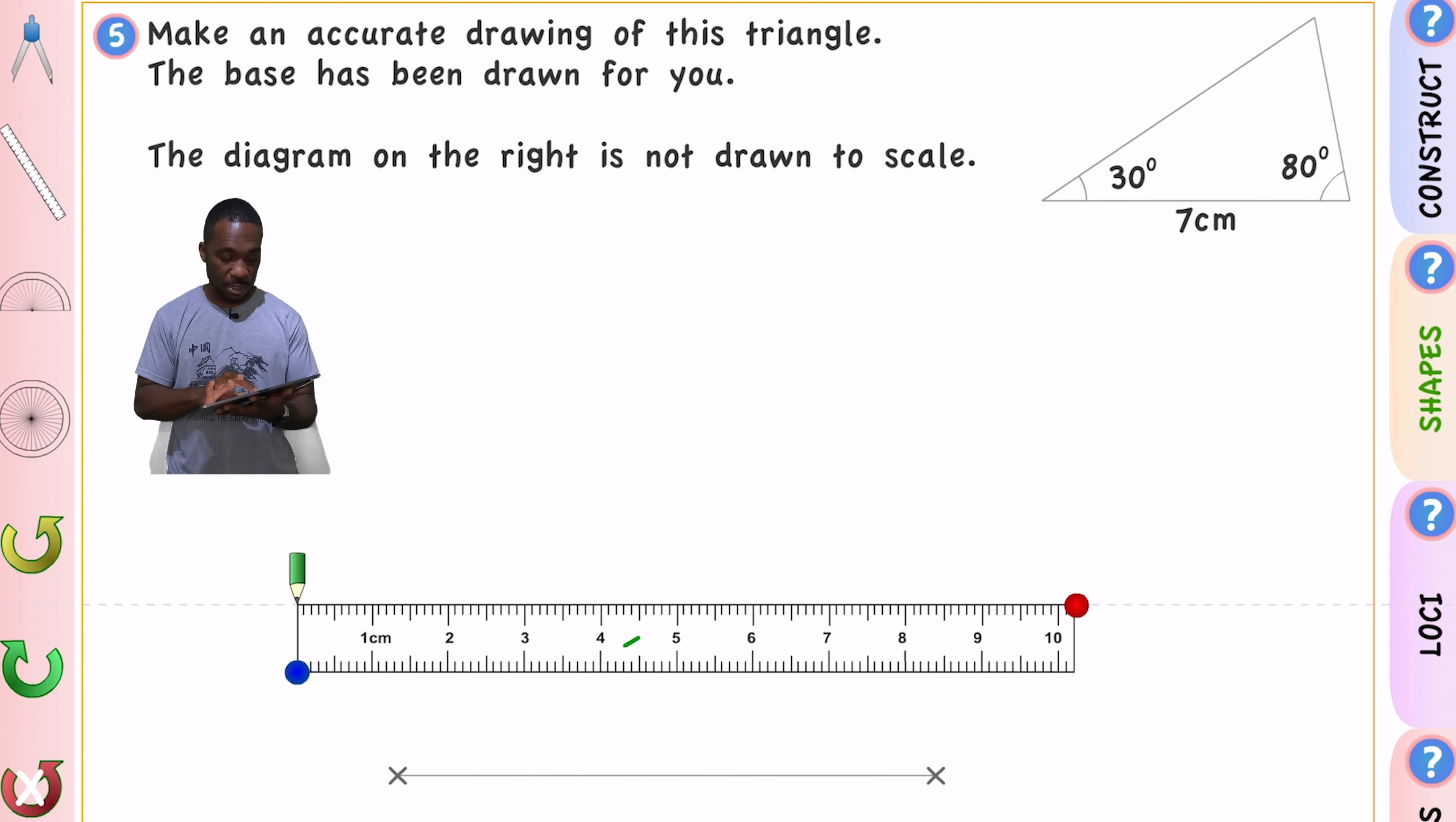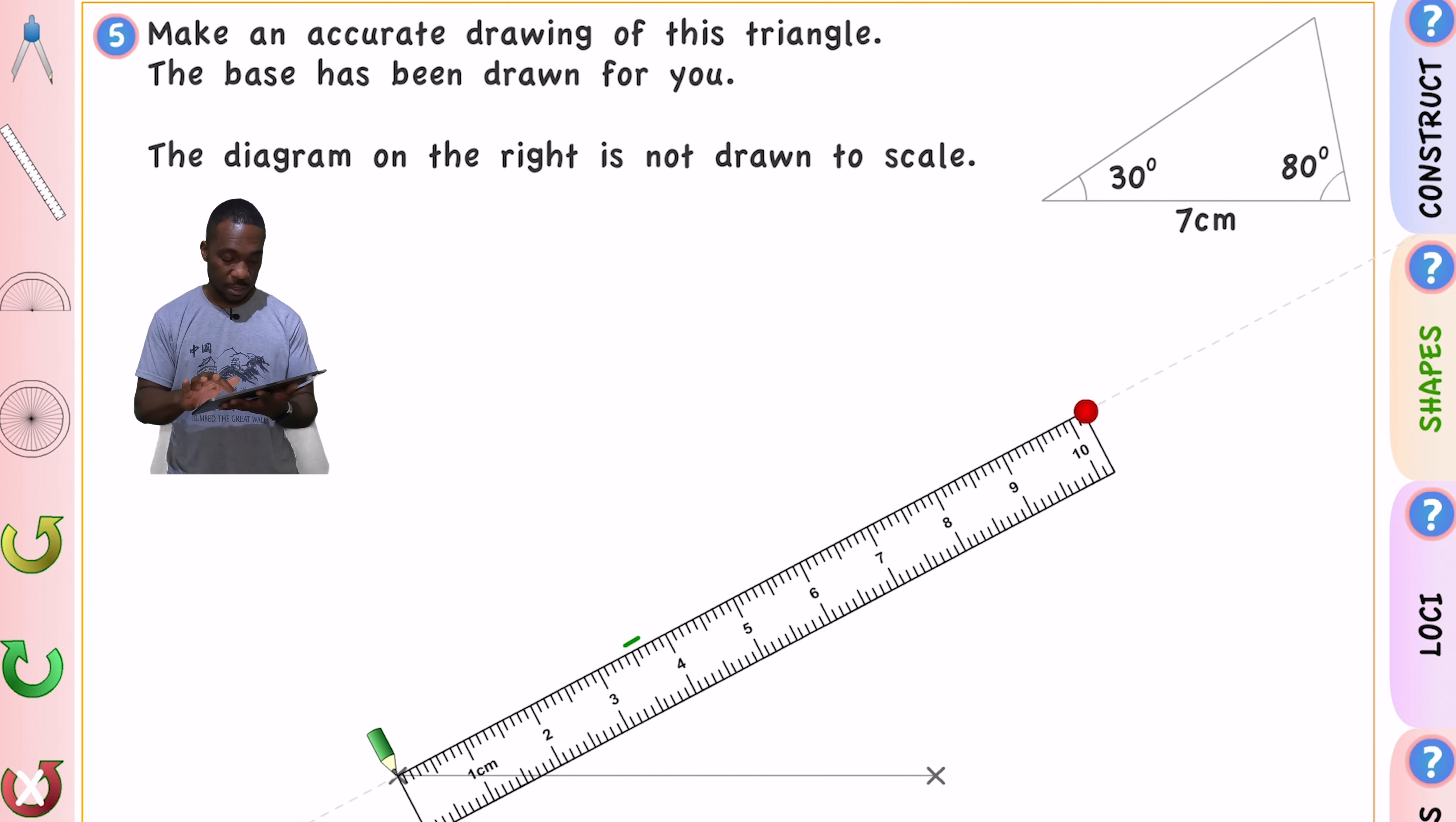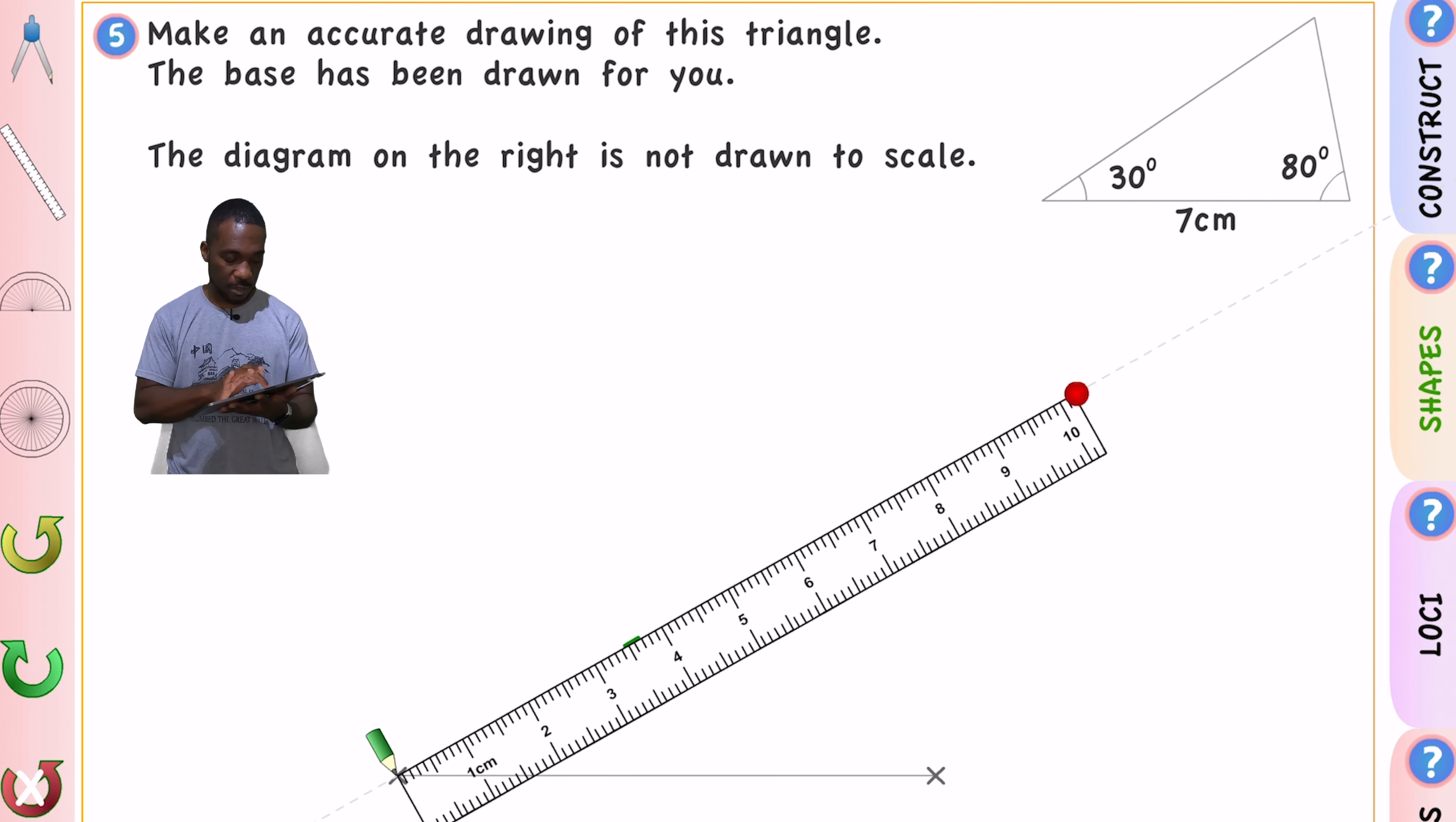I'm going to take my ruler now. And I'm going to go to the end. And I'm going to draw a line that's longer than it really needs to be. So I'm going to go through that point. And that's my 30 degree line there. 30 degree angle.